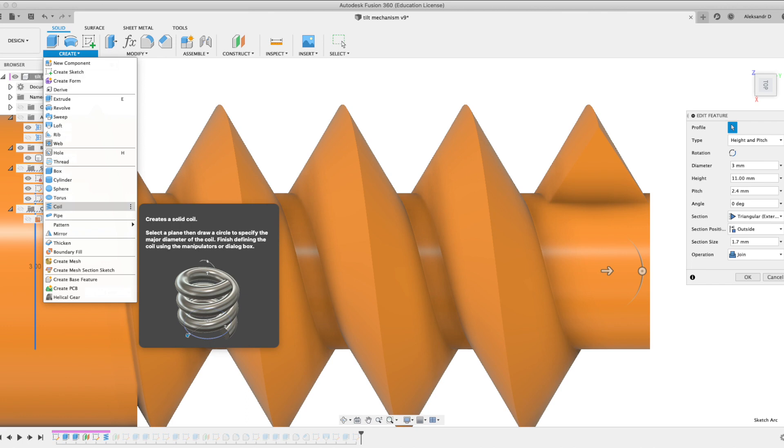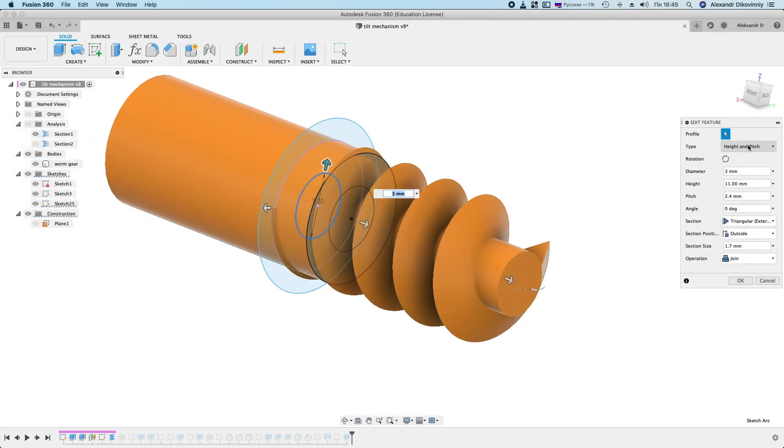To create a screw use the coil tool. I chose these settings and sizes. The main thing is the pitch, that is, the distance between the turns. I measured the part and got a step size of 2.4mm.